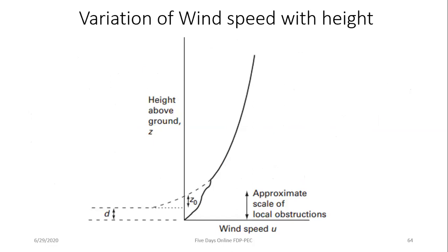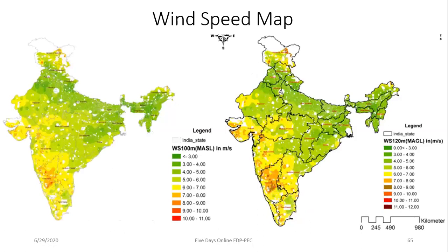Wind speed increases with height, and the power output from wind is P = ½ρAv³, where ρ is air density, A is the rotor swept area, and v is wind velocity. Since power is proportional to velocity cubed, doubling the wind speed gives eight times more power. This is why taller wind turbines are more productive. Wind speed is measured at multiple heights — 100, 120, 150 meters — using masts, and this data is available from the National Institute of Wind Energy.